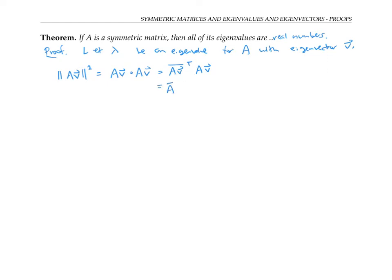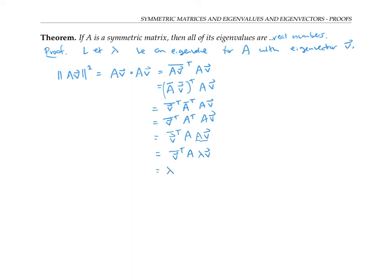Rewriting, this becomes (A-conjugate times v-conjugate) transposed times Av, and since the transpose of a product reverses order, we expand further. Since A has all real entries, A-conjugate equals A. And since A is symmetric, A-transpose equals A. Using the eigenvalue equation Av = lambda·v, we substitute and pull out the scalar lambda twice, arriving at lambda² times (v-conjugate-transpose times v), which equals lambda² times |v|².